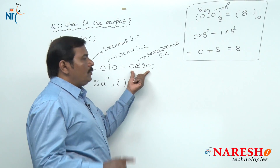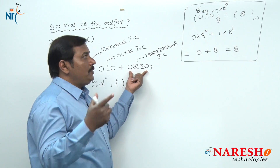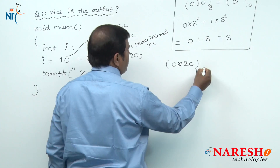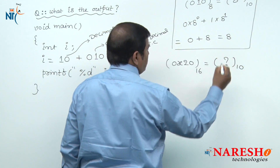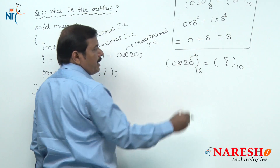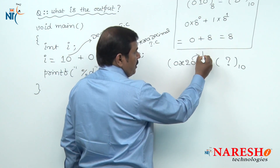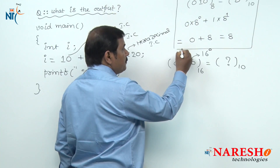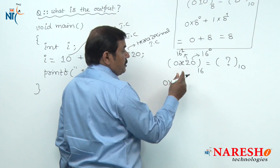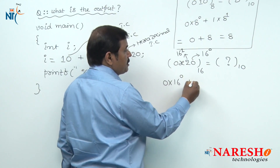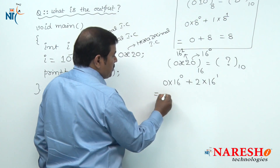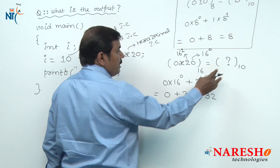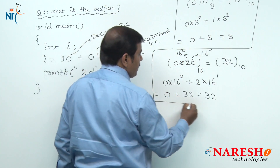Now let us watch how to convert the hexadecimal integer constant 0x20 into its equivalent decimal. In the hexadecimal number system, the units place digit has the weight 16 power 0 and the tens place digit has the weight 16 power 1. Multiply each digit of this hexadecimal integer constant with its corresponding weight. The equivalent decimal value for this hexadecimal integer constant is 32.